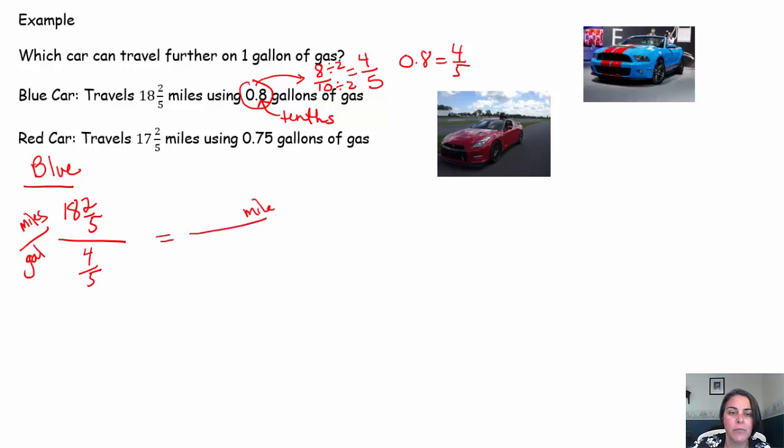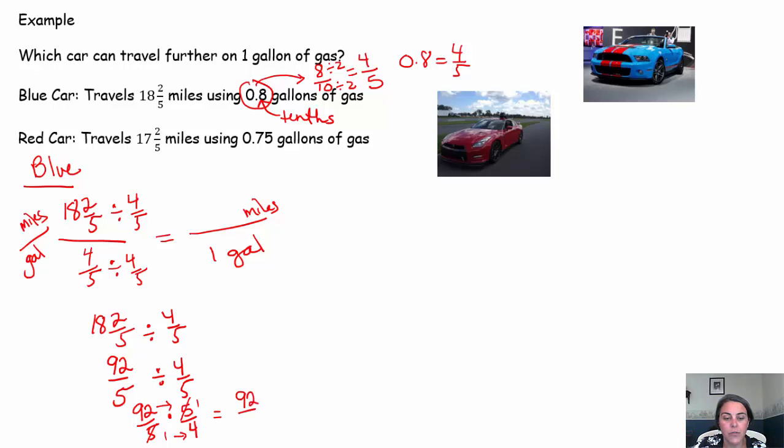How many miles can that blue car travel on one gallon? Again, to write this as a unit rate, just divide the denominator by itself. If I'm going to divide the denominator by 4/5 to get to 1, I'll also need to divide the numerator by 4/5. So we have 18 and 2/5 divided by 4/5. And so we're going to convert this to an improper. 5 times 18 is 90 plus 2 is 92 fifths. Use your calculator if you need. Divide it by 4/5. That's 92 fifths times 5 fourths. You could choose to multiply straight across the top, straight across the bottom, then divide. Or I'm just going to say 5 goes into 5 once, 5 goes into 5 once, and then I'll multiply straight across the top, straight across the bottom. So this is 92 fourths. And what's 92 fourths? We take 92, divide it by 4, and we get 23.